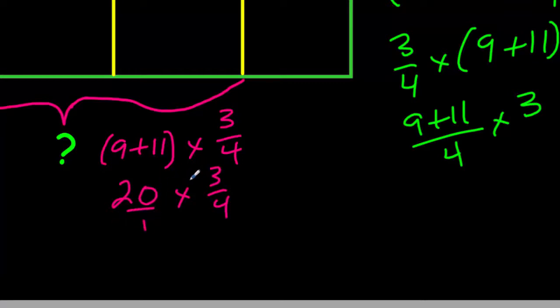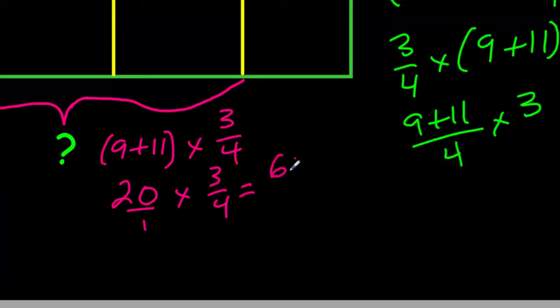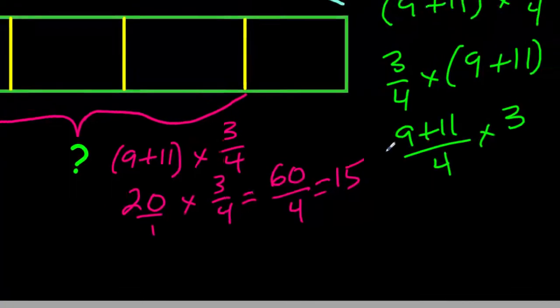So let's go ahead and evaluate this expression. Let's take the 9, the sum of 9 and 11, multiplied by three quarters. We learn that we have to do what's in the parentheses first, which is 20 here. Then we're going to times that by three quarters. I'm going to write that 60 over 4. So I get 15.